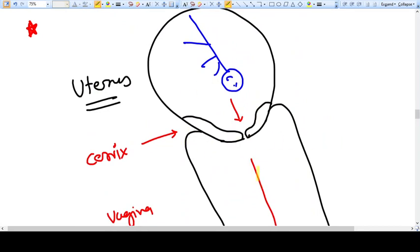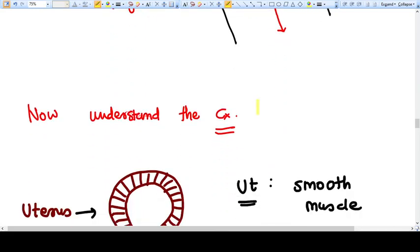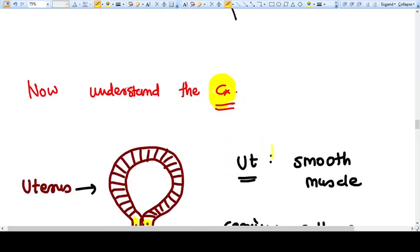You can see here the baby. If it wants to come out from this pathway, even to enter this pathway, the baby needs to pass out from the cervix, and the cervix acts as a gate. Now, let's particularly understand the cervix.